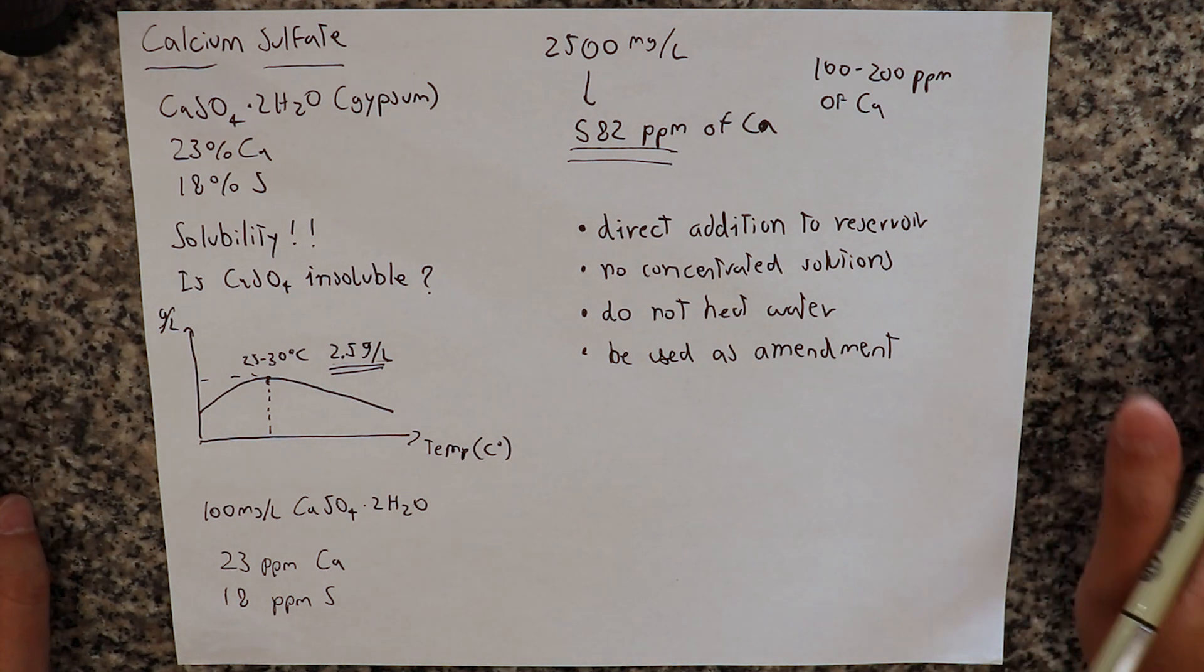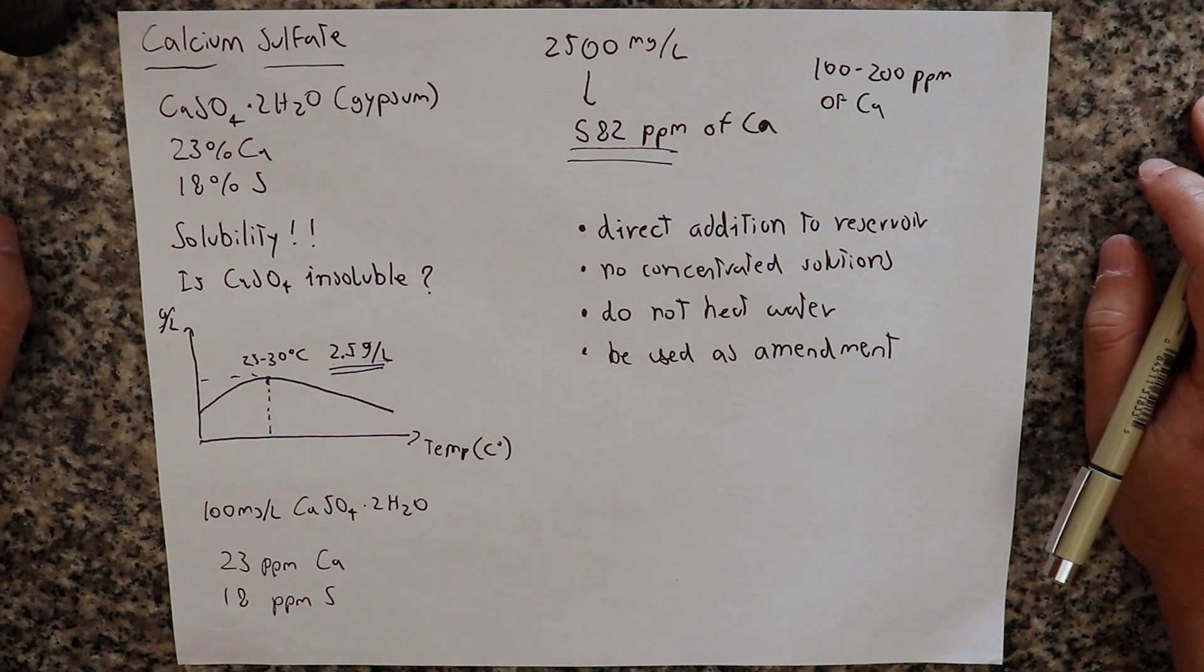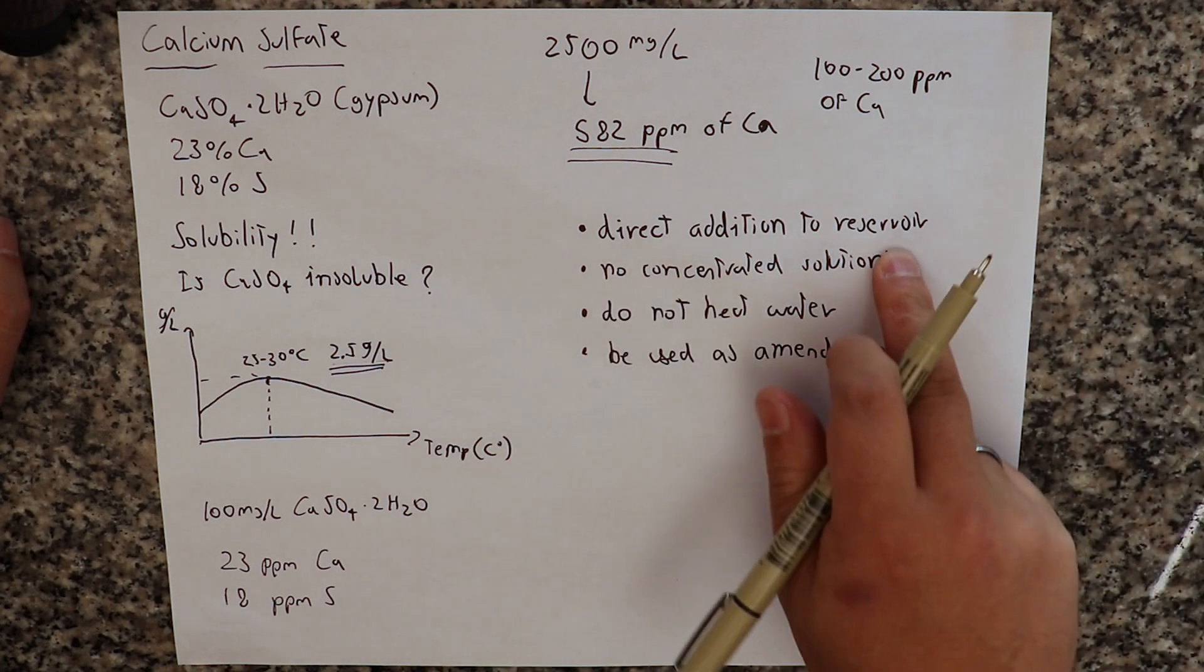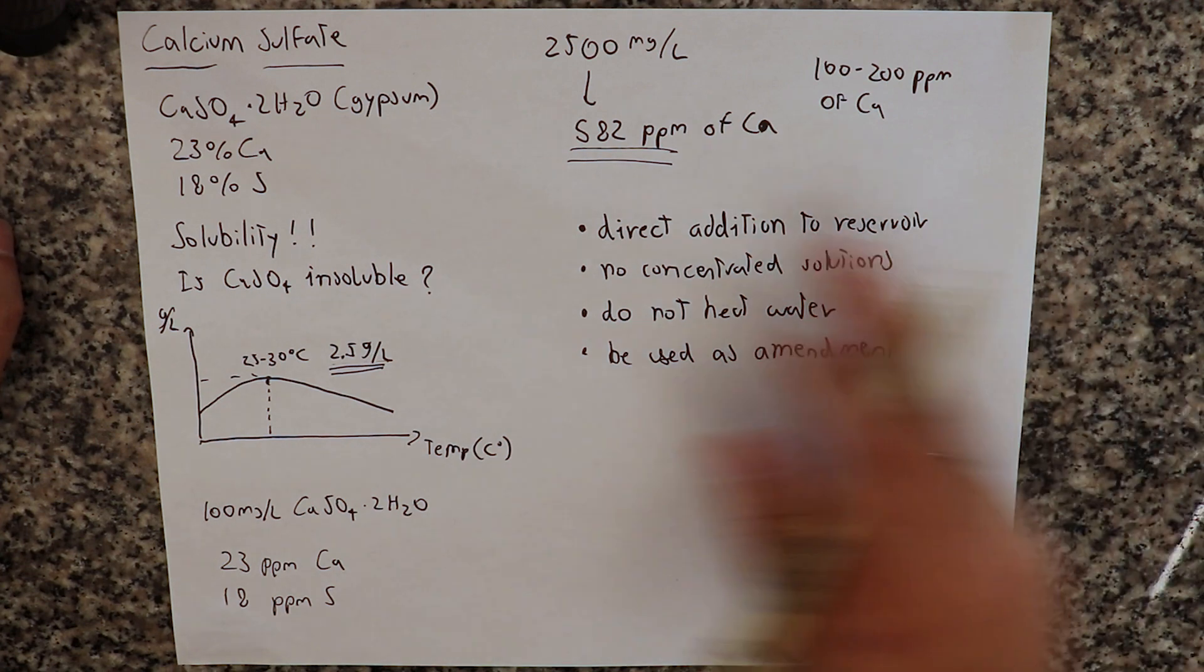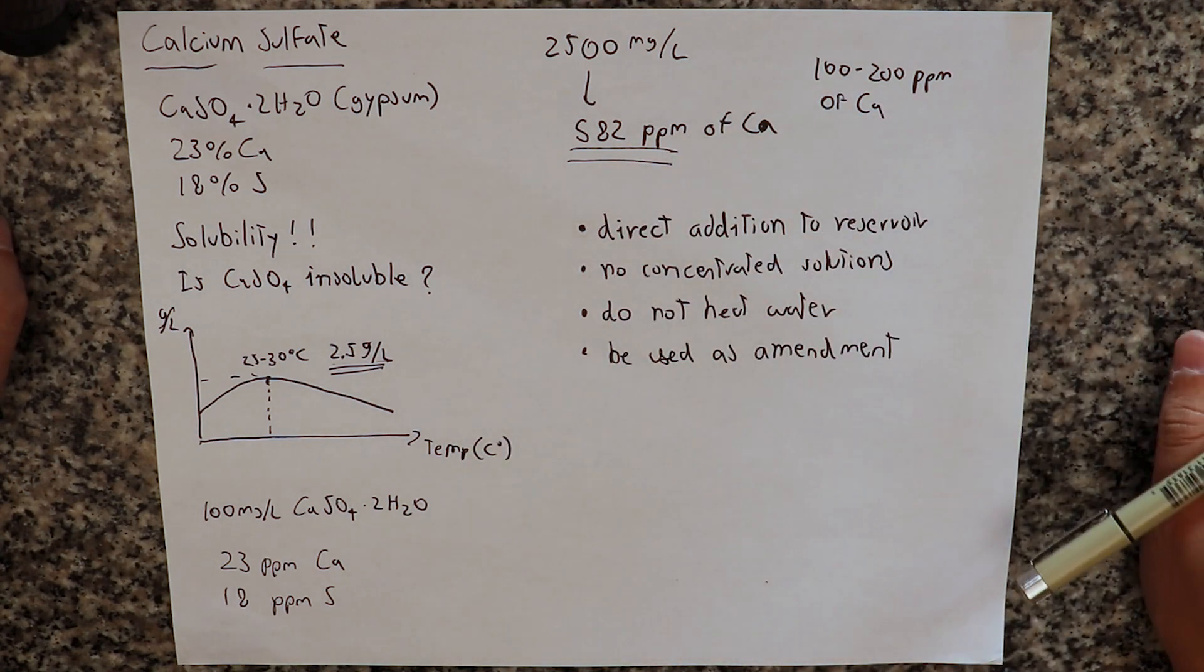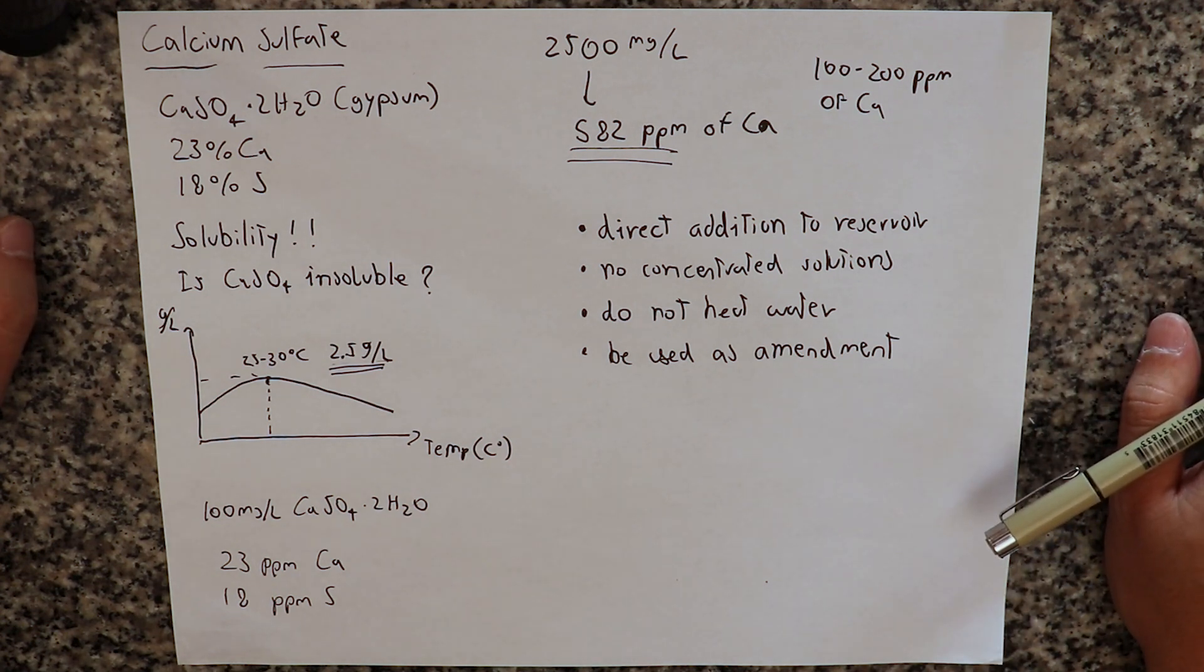So in today's video, I hope you learned why calcium sulfate can be used in hydroponics. It cannot be used in concentrated solutions, but it is soluble enough to be used in reservoir additions, direct reservoir additions. And it is so soluble in fact that you could add all the calcium that you would need for plant growth without any other calcium salts if you wanted to do that. Thank you very much for watching, see you on the next video.